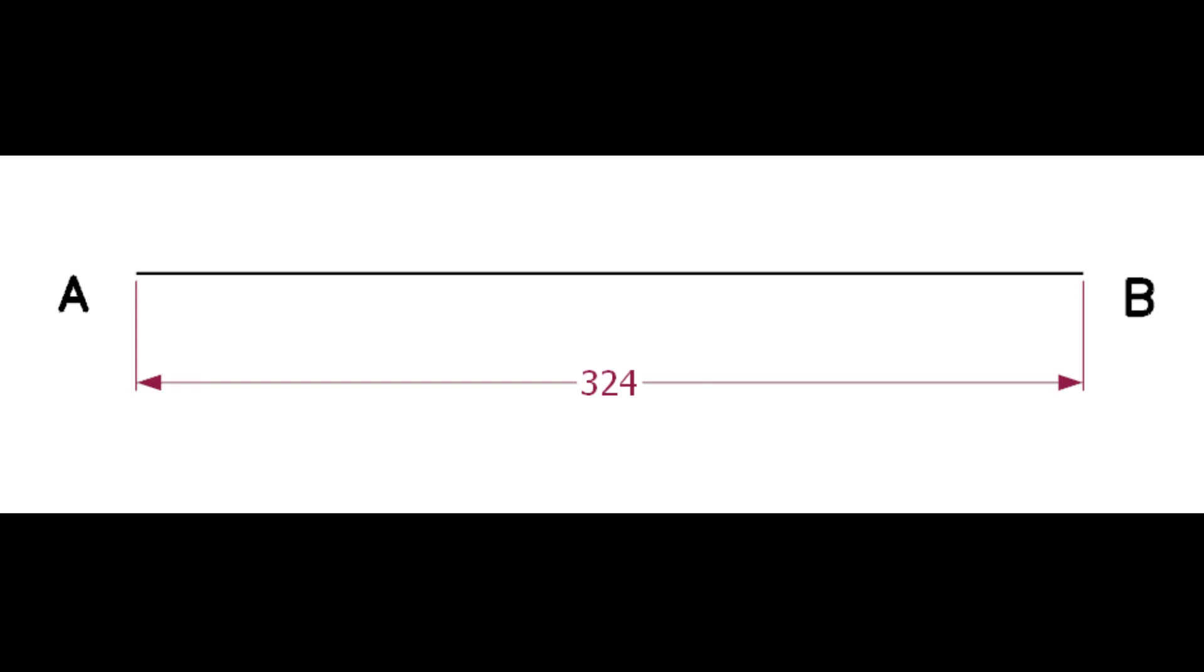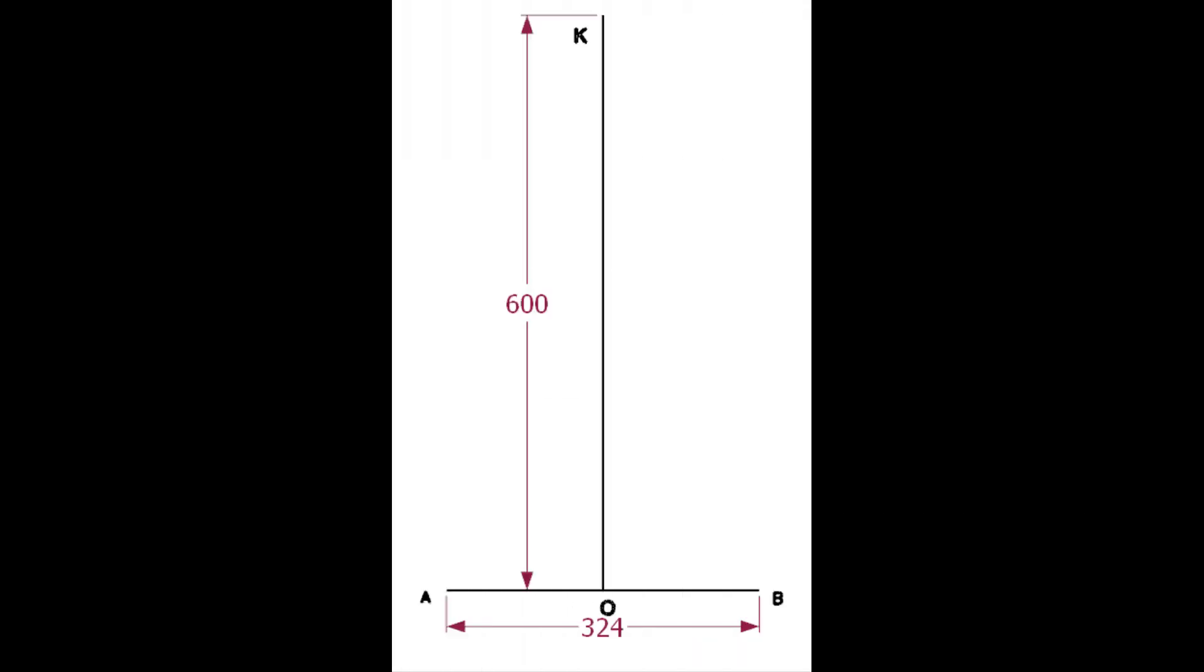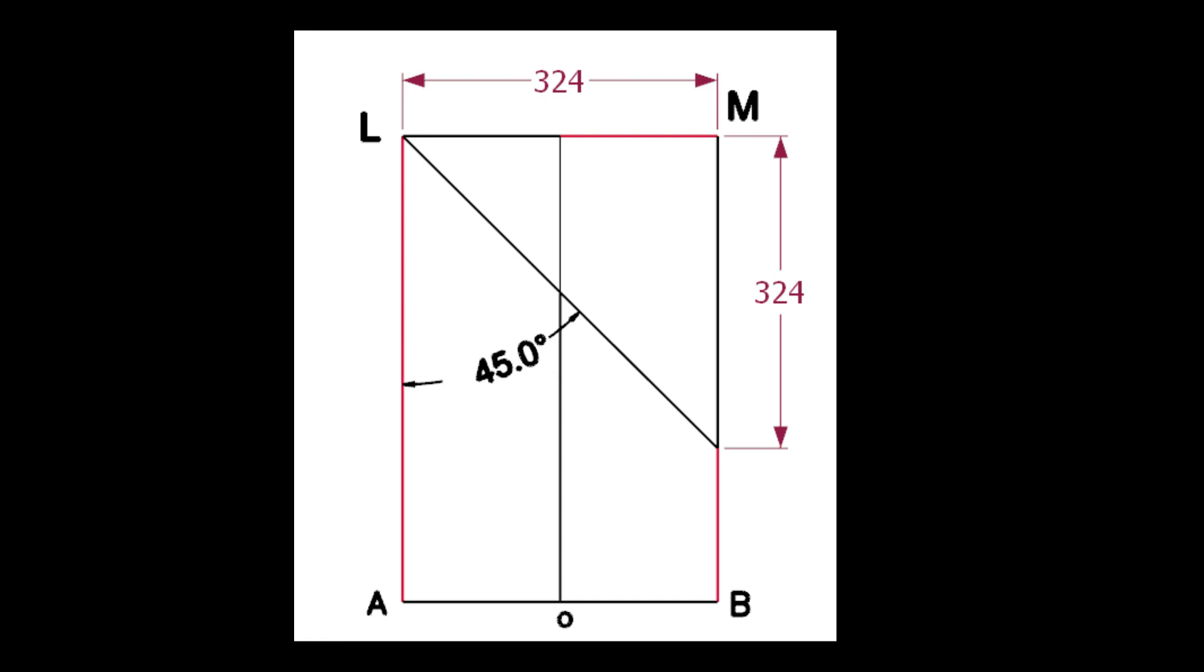Draw a line AB of length 324 millimeters, that is the OD of the pipe. Draw the line OK; the length of the line is not important, but must be more than the pipe diameter. Draw the lines AL and BM.